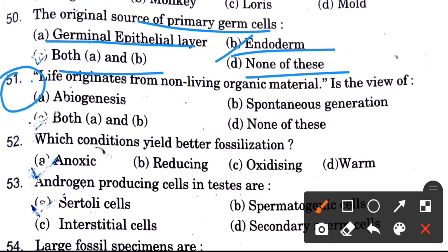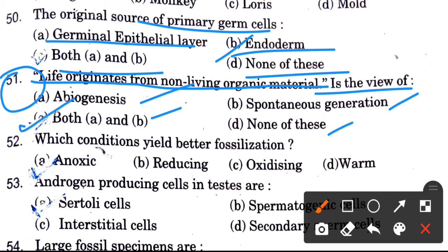Life originates from non-living organic matter — this view of life says it came from non-living organic matter. What is this called? Options are abiogenesis, spontaneous generation, both A and B, and none of these. The answer is both A and B.